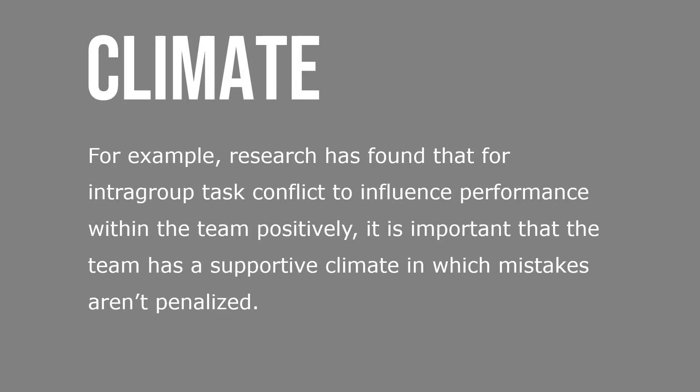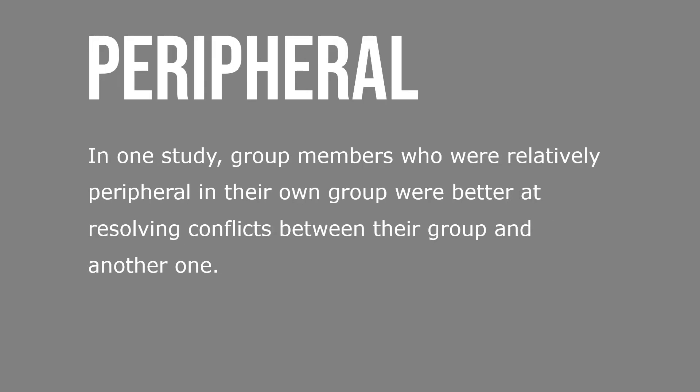For example, research has found that for intragroup task conflict to influence performance within the team positively, it's important that the team has a supportive climate in which mistakes aren't penalized. In one study, group members who were relatively peripheral in their own group were better at resolving conflicts between their group and another one.